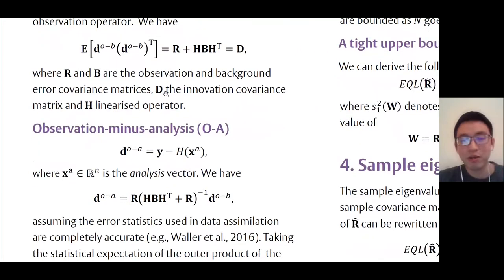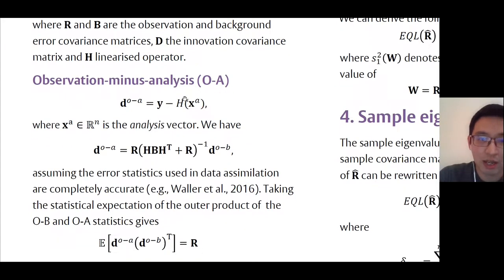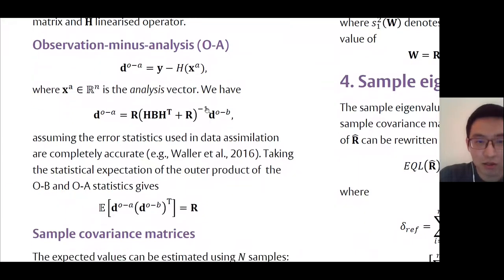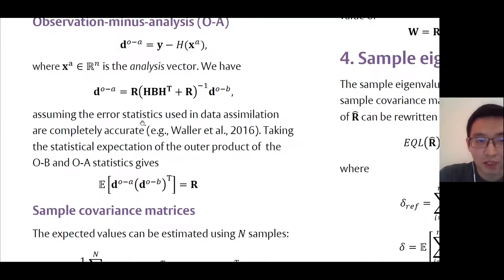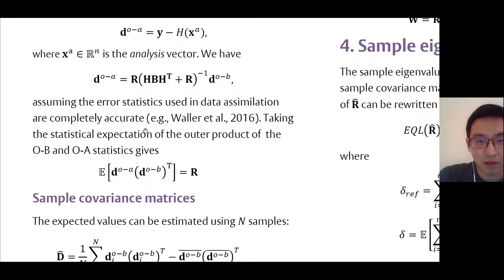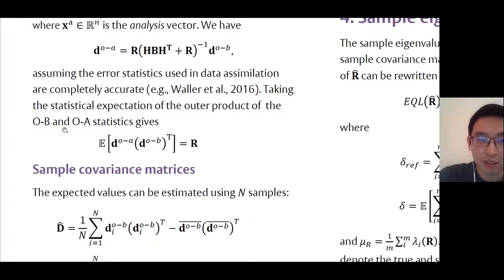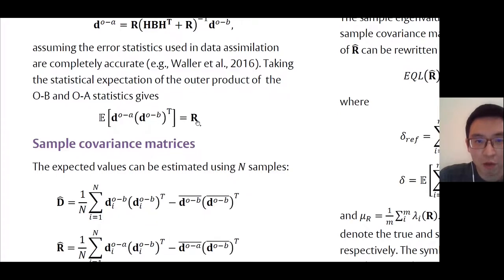The second statistic we use is called observation minus analysis, or O minus A statistic. Similarly, this is given by the difference between observation and analysis in observation space. We may find that there is a relation between O minus B and O minus A statistics. If we assume the background and observation error statistics used in our data simulation are completely accurate, then by taking the statistical expectation of the outer product of the O minus B and O minus A statistics, we will get the observation error covariance matrix.